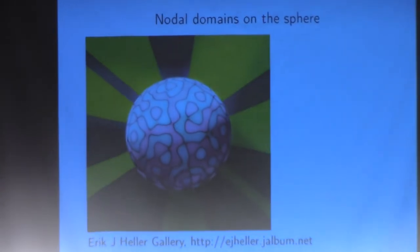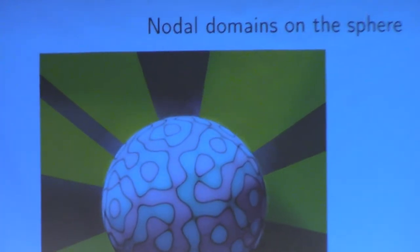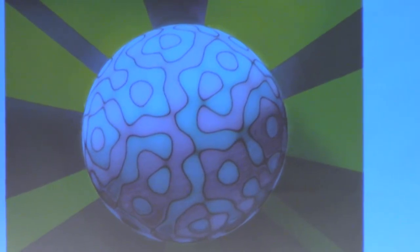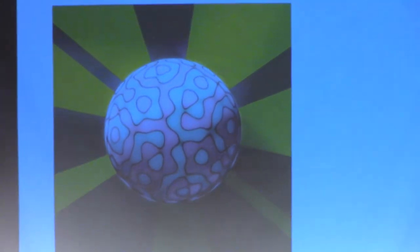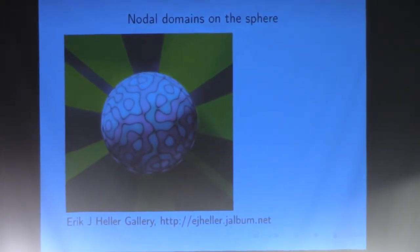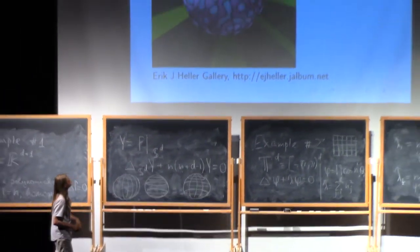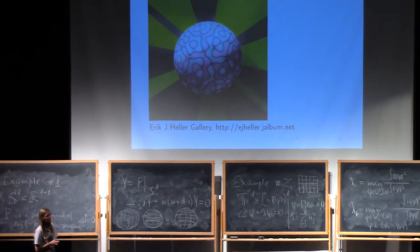The last picture is nodal domains on the sphere. There are many beautiful pictures if you go to this site. It's just one of them. And you see that the nodal set, the lines on the sphere, are not so nice structured as before. And in this case, the sphere is divided into several nodal domains.